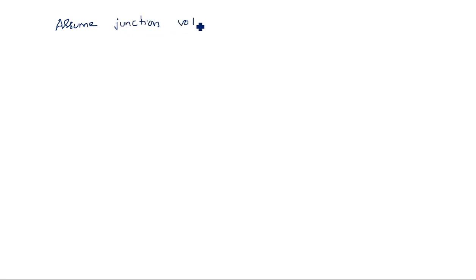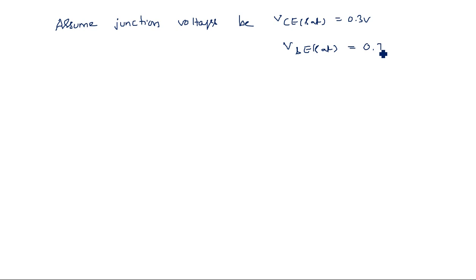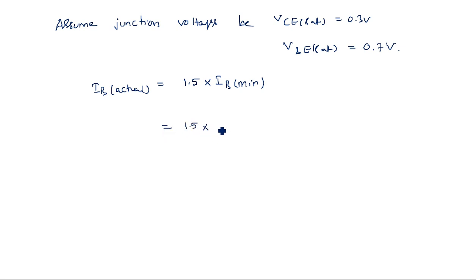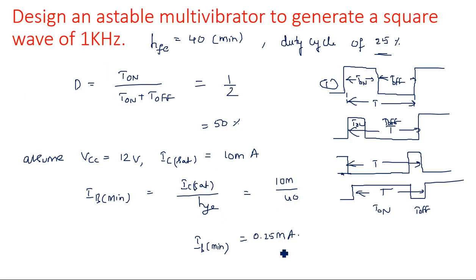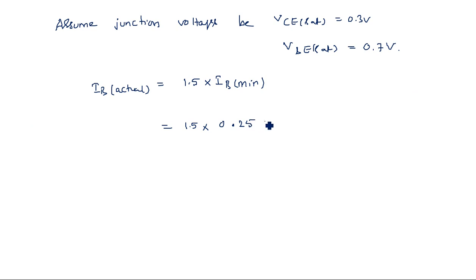Assume junction voltages: VCE_sat = 0.3 volts and VBE_sat = 0.7 volts. The actual base current IB_actual is 1.5 times the minimum base current, so IB_actual = 1.5 × 0.25 mA = 0.375 milliamperes. We assume that the transistors are driven equally into saturation when they are conducting.